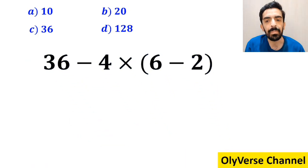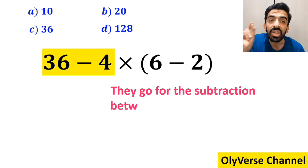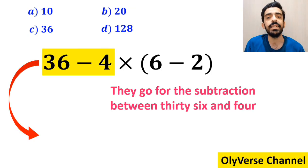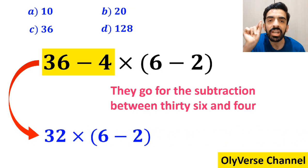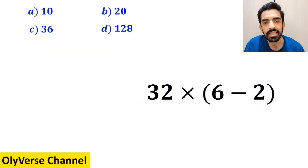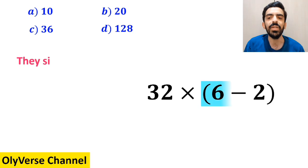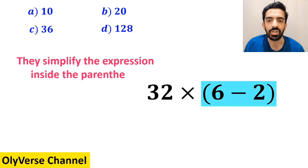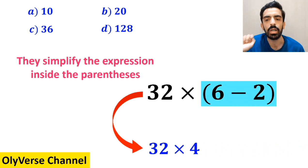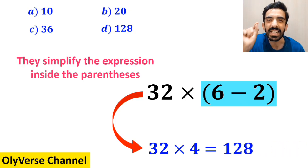In the next step, they perform the subtraction between 36 and 4, highlighted in yellow, and write 32 times (6 minus 2). In the final step, they simplify the expression inside the parenthesis and replace it with 32 multiplied by 4, which gives them the answer 128.